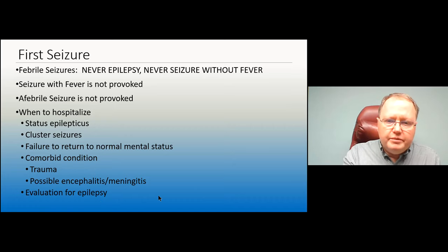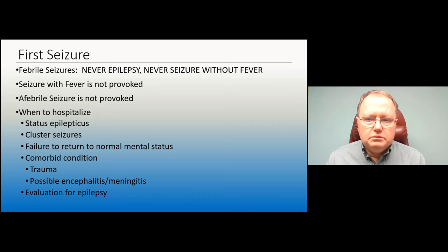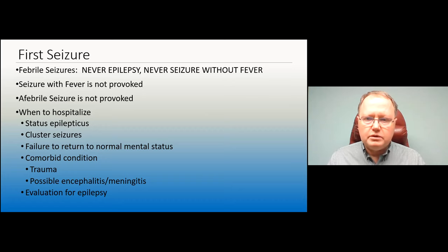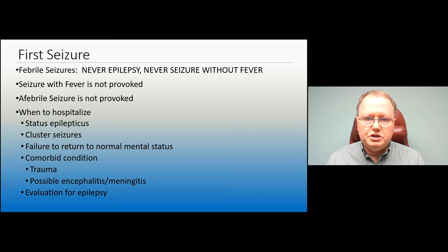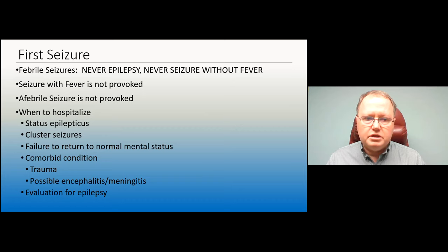When do you hospitalize a patient? When they come in in status epilepticus, they'll likely need hospitalization. Any patient still seizing when they arrive at the ER is in status epilepticus, going back to not regaining normal mental status between seizures. If they've had a cluster of seizures and aren't returning to normal mental status, suspect subclinical status epilepticus — hook them up to EEG and make sure they're not having seizures we can't appreciate clinically. Also hospitalize for other complicating conditions: trauma, fever with abnormal mental status, nuchal rigidity, concern for encephalitis or meningitis.